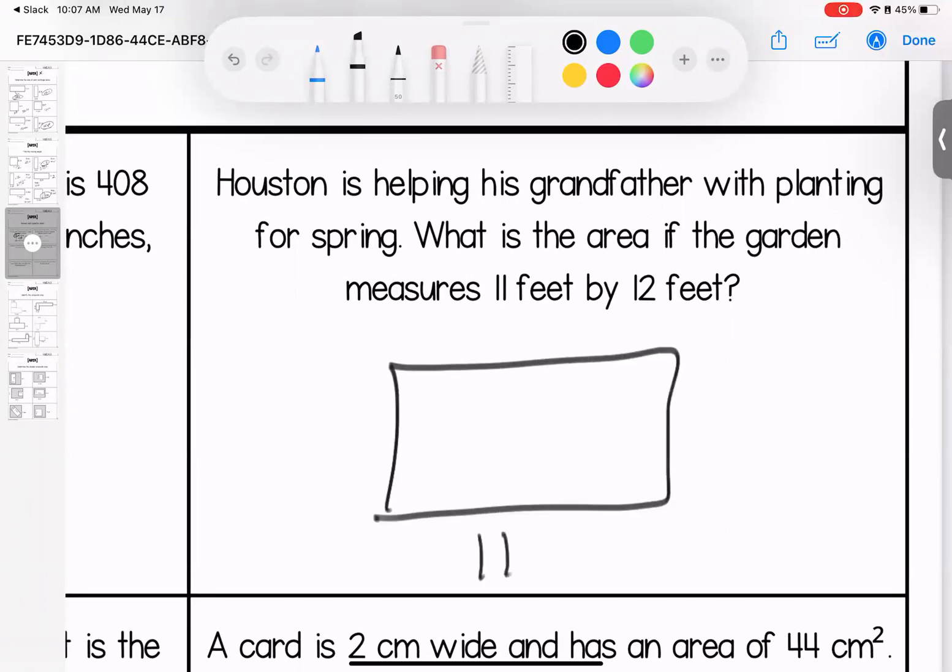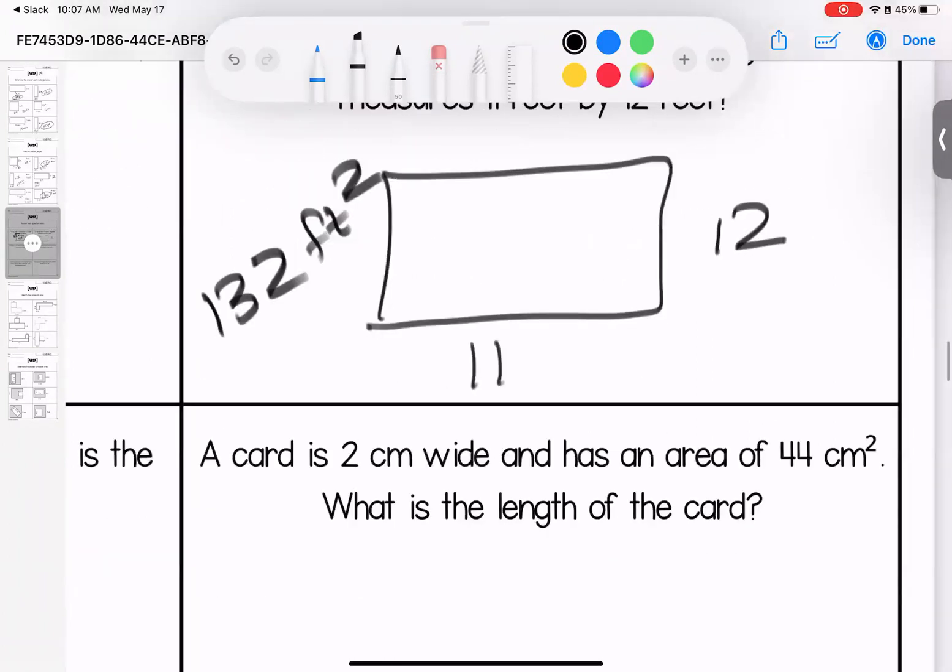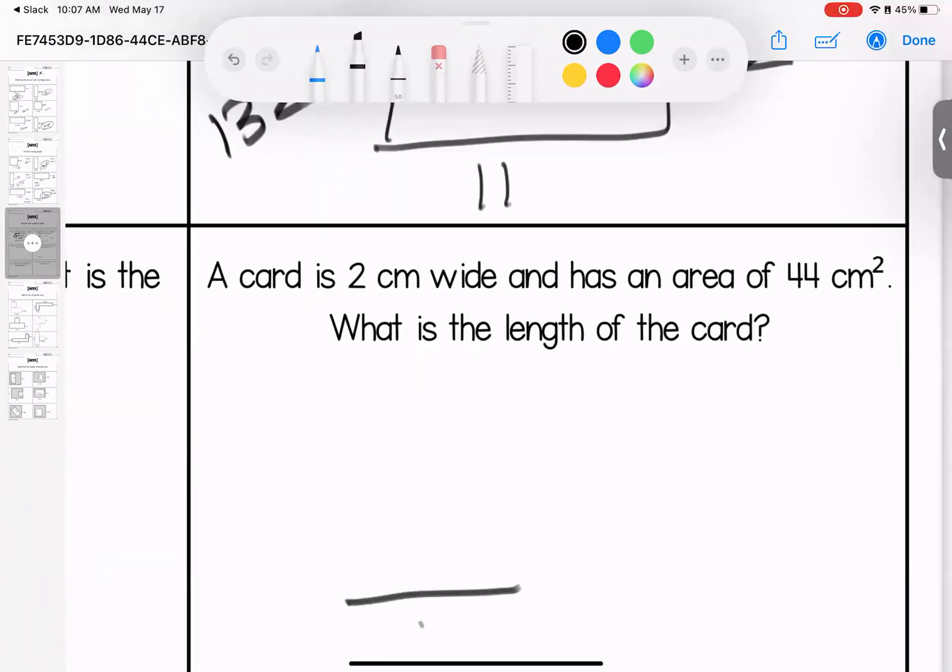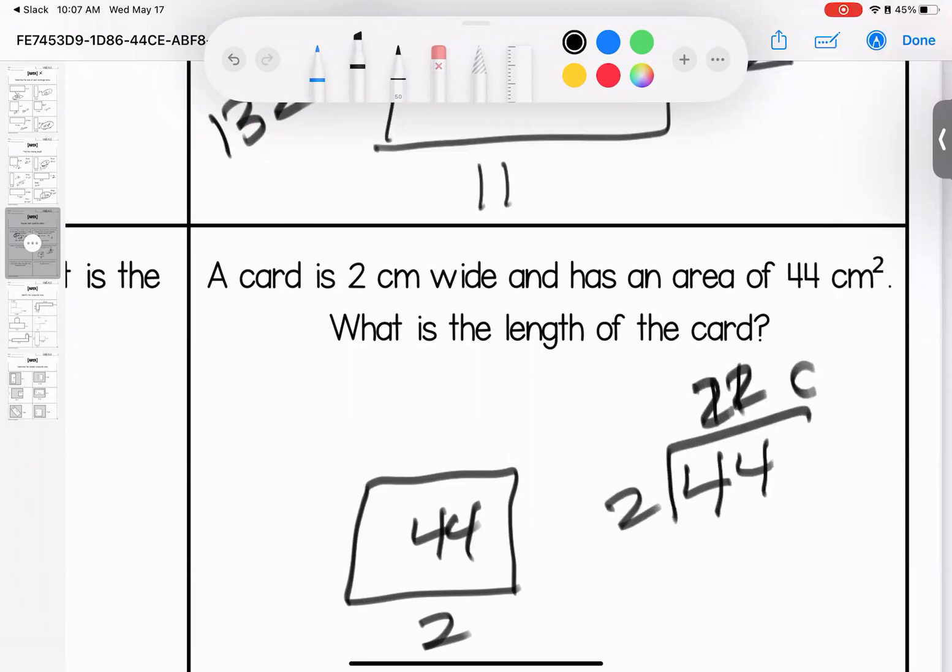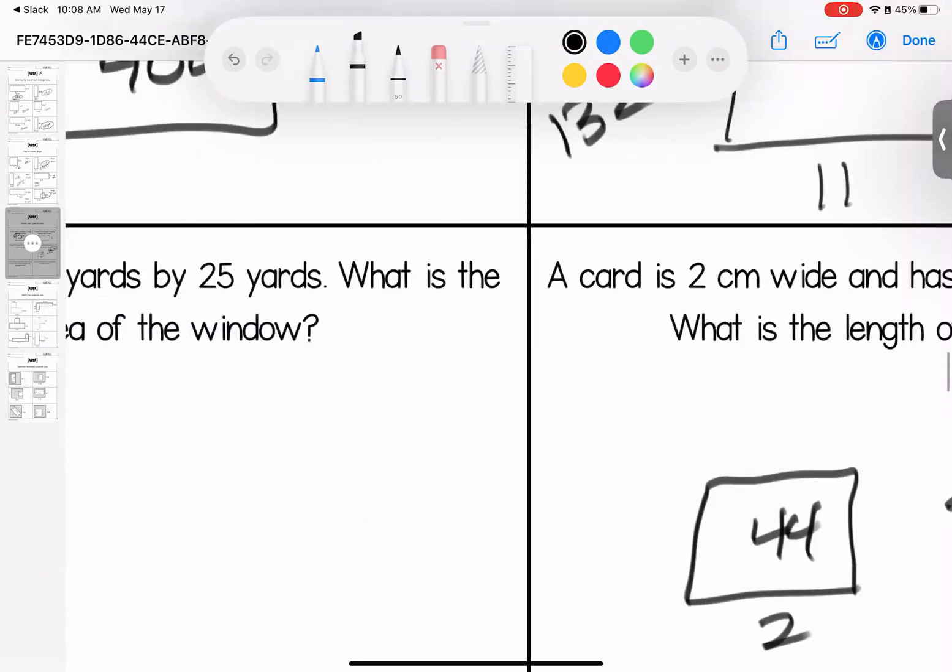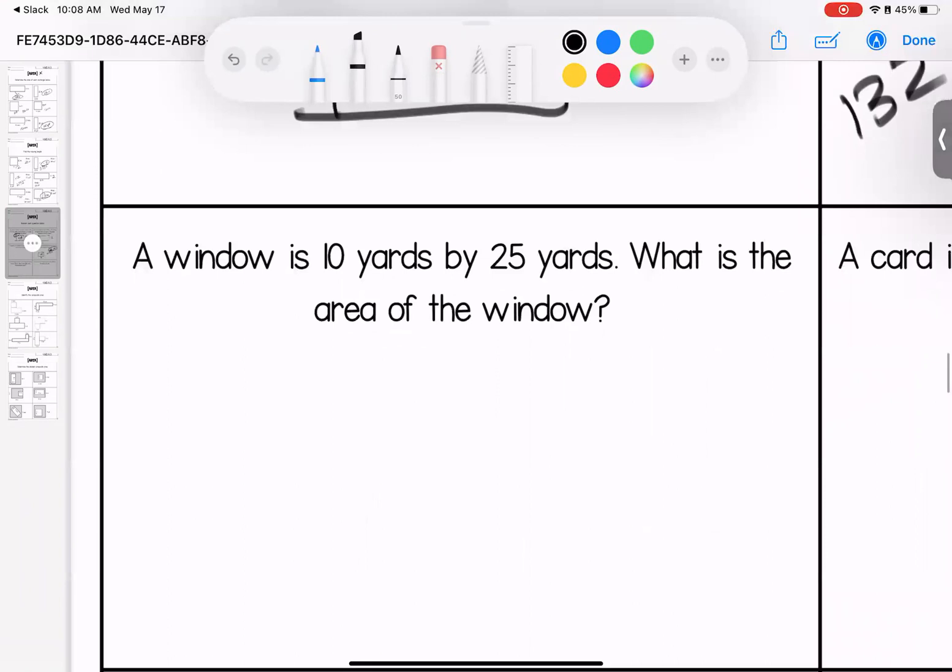Houston is helping his grandfather with planting for spring. What is the area of the garden if it measures 11 by 12? If we do 11 times 12 we get 132 feet squared. A card is 2 centimeters and a total of 44 centimeters squared. What is the length? The length is 22 centimeters. 22 times 2 gives us 44.